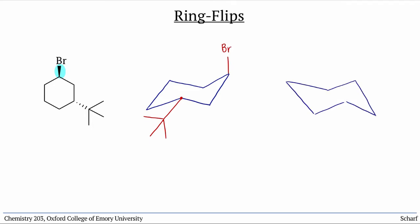Now let's draw the other possible chair conformation of this compound, after a ring-flip. We'll take the two ends and flip them so that our new chair looks like this. Now the bromine is equatorial up, and the t-butyl group is axial down.